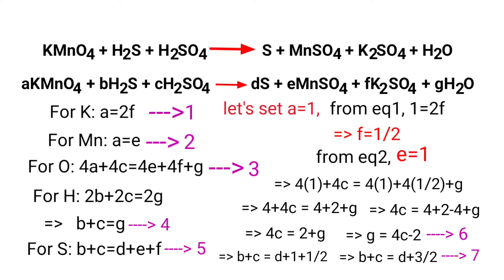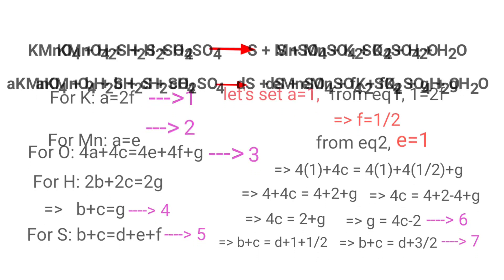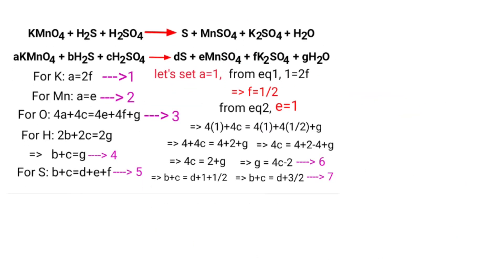Now see here in the skeleton equation. In the left-hand side there are 4 hydrogen atoms, but in the right-hand side there are 2 hydrogen atoms. So to balance the hydrogen atoms, we can consider the g value as 2.